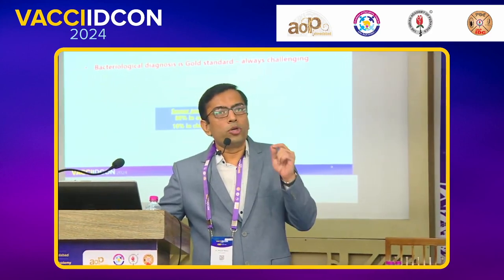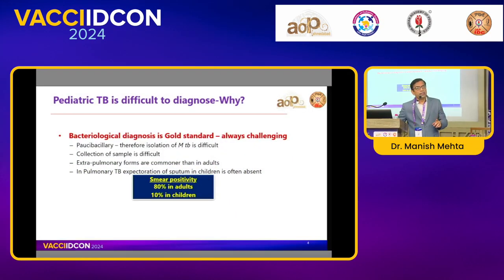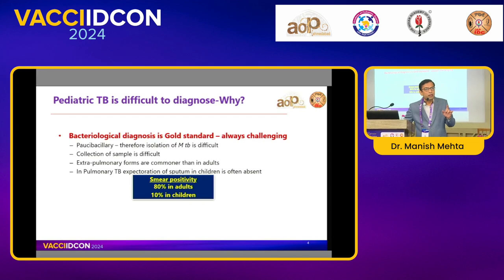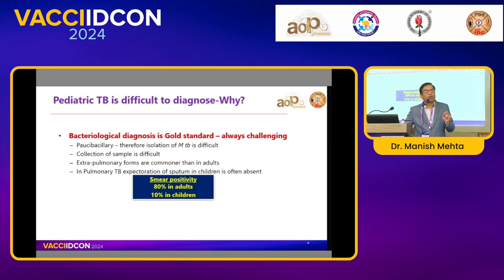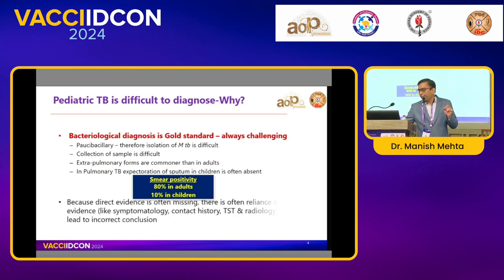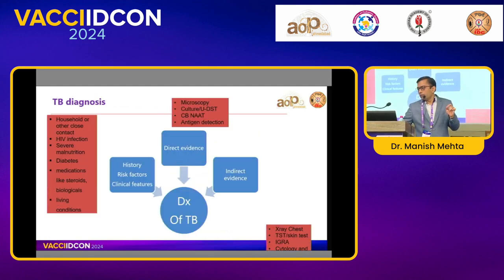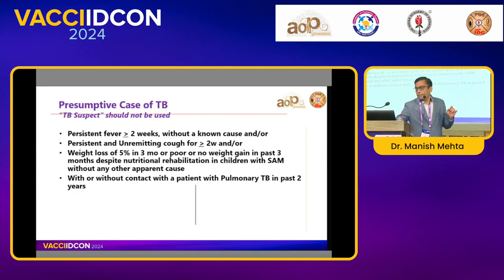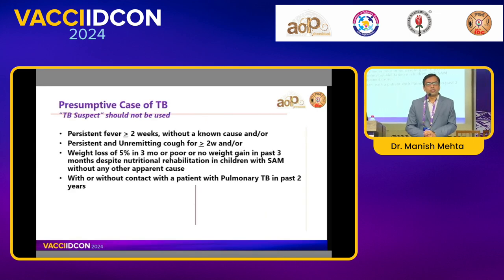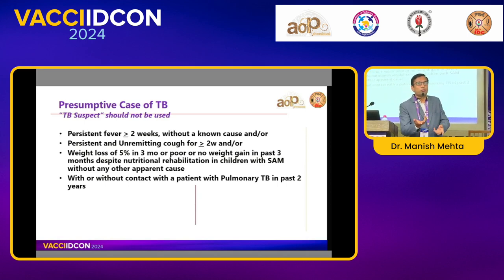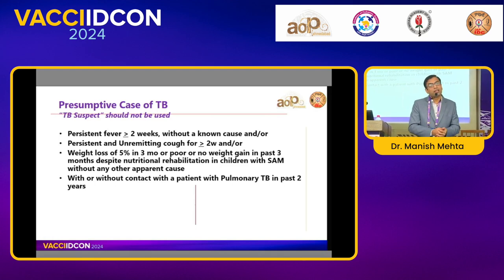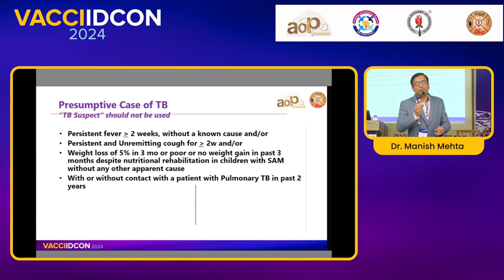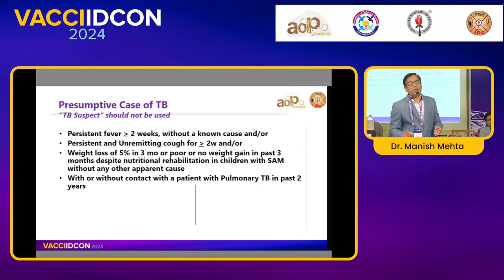Third criterion is weight loss — more than 5% weight loss in the last 3 months, or no weight gain in last 3 months despite good nutritional rehabilitation in a malnourished patient. These are the three main criteria. Along with that, history of contact with tuberculosis in the last 2 years is very important. Contact matters whether it is pulmonary or extra-pulmonary tuberculosis, because there may be silent pulmonary TB along with extra-pulmonary disease, and that person can still transmit the infection to the child.